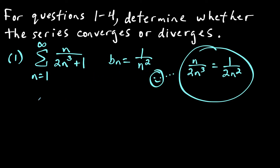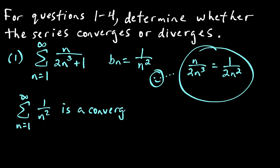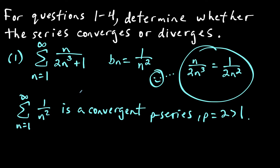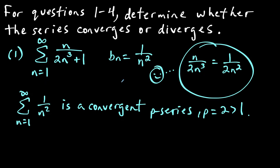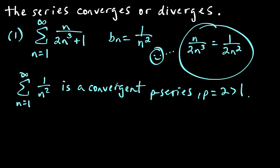When we're choosing our b_n, all we need is the simplest form of this corresponding sequence, which would just be 1 over n². We say that the series from n equals 1 to infinity of 1 over n² is a convergent p-series, because the exponent p equals 2, which is greater than 1. So we know we have a convergent series that we're comparing this to, and by using the limit comparison test, we're setting ourselves up to say that the original series converges.